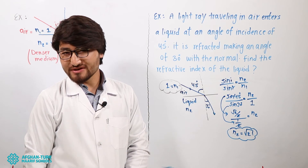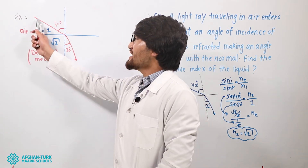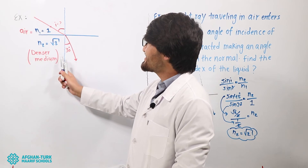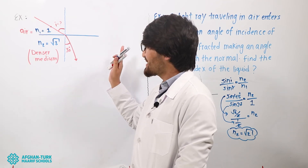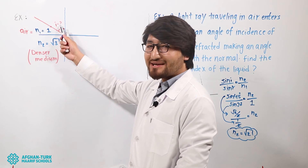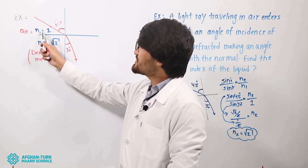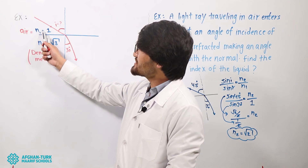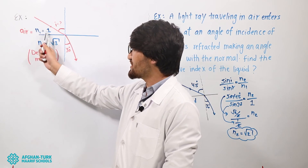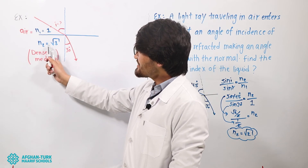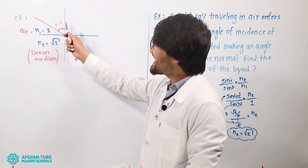Let's do one more question about the law of refraction. Look at this figure. The light ray travels from air to a denser medium — the denser medium may be glass, different liquids, water, or something else. Find the angle of incidence. The angle of refraction is 30 degrees. The index of refraction in medium 1, which is air, is 1 — remember, the index of refraction for air is always 1. And the index of refraction in medium 2, the denser medium, is the square root of 3. Find the angle of incidence.